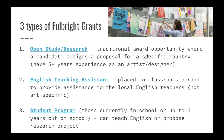There are three types of Fulbright grants. This was a detail we added after last week because there was a good question about students versus non-students, and these three types of grants clarify that. Number one, there is an open study research grant for scholars. This is the traditional award opportunity where a candidate designs a proposal for a specific country, and you would have at least five years of experience as an artist or designer — you've been out of school for at least five years.